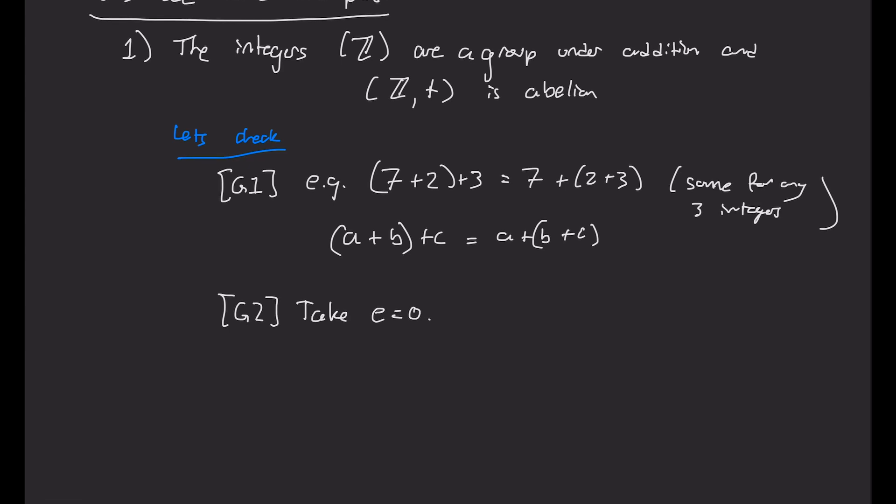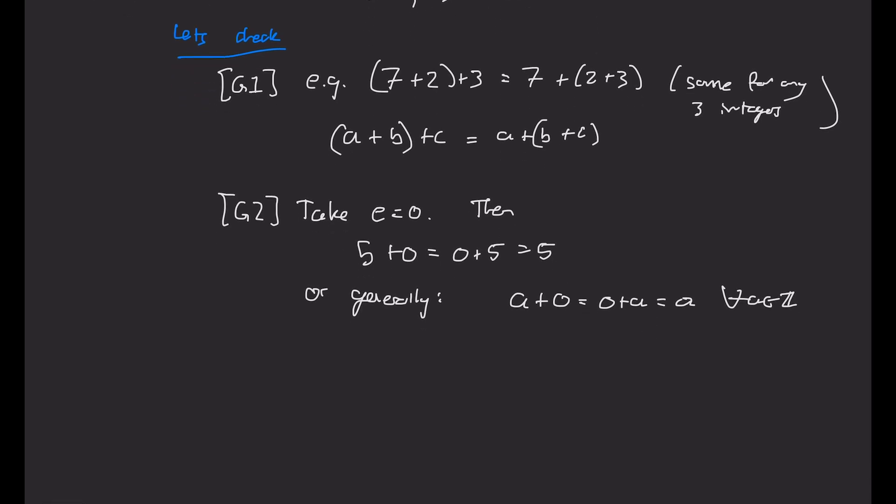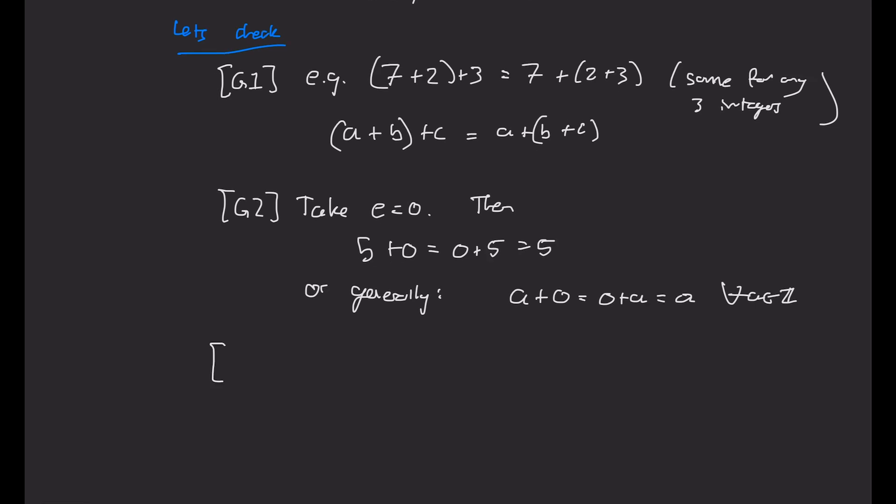For G2, we can take that unit element to be 0, that identity element, and then we see that that satisfies the property that 5 plus 0 is 0 plus 5 is 5, or works for anything other than 5 as well. So a plus 0 is 0 plus a, which is a. So that behaves like how we want E in G2. So it has an identity.